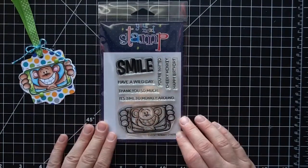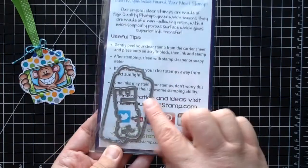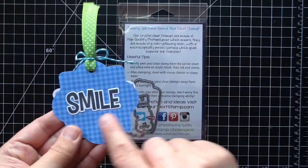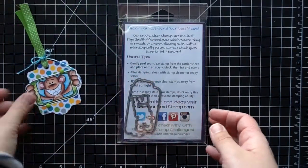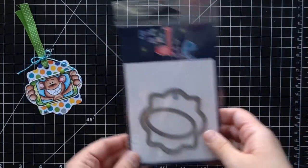Here is the stamp set for this week. It's called Cheeky Monkey, and you get this really cute little guy who's taking a selfie of himself, and you get the little smile word here. You can also use the coordinating die cut to cut that out, and it cuts out so nice. I love that die so much.